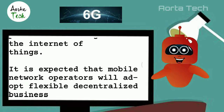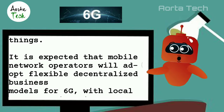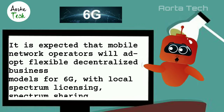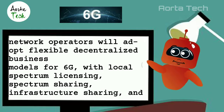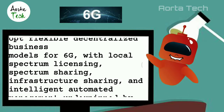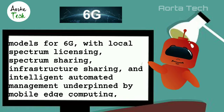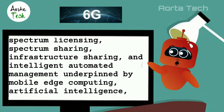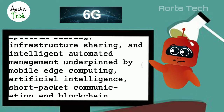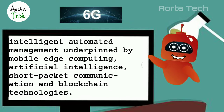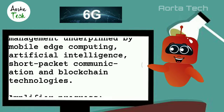It is expected that mobile network operators will adopt flexible decentralized business models for 6G, with local spectrum licensing, spectrum sharing, infrastructure sharing, and intelligent automated management underpinned by mobile edge computing, artificial intelligence, short packet communication, and blockchain technologies.